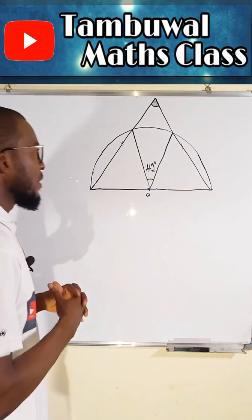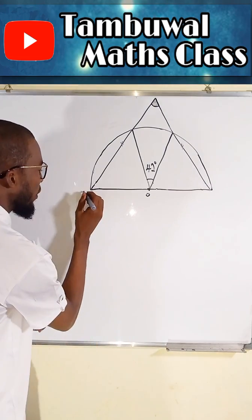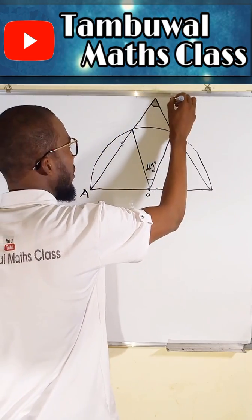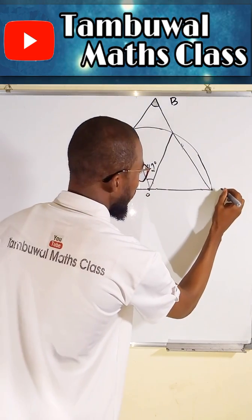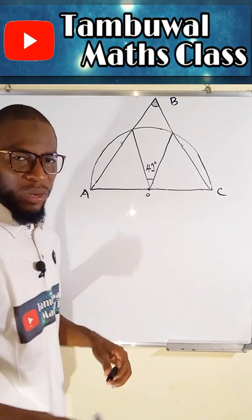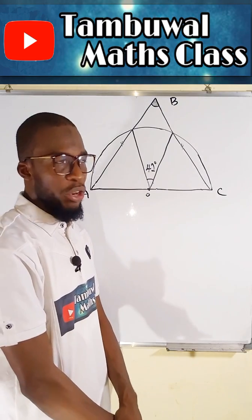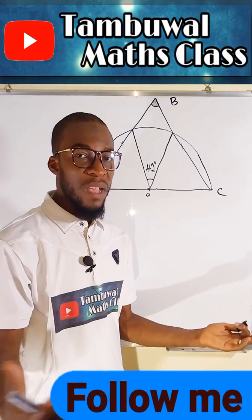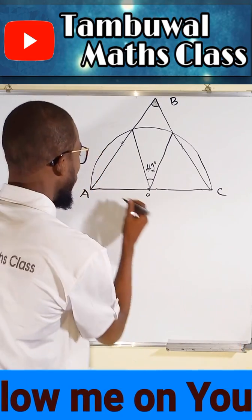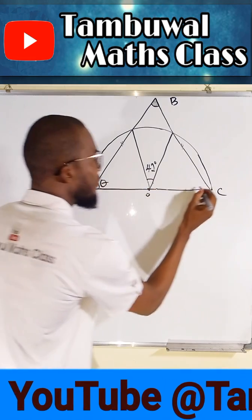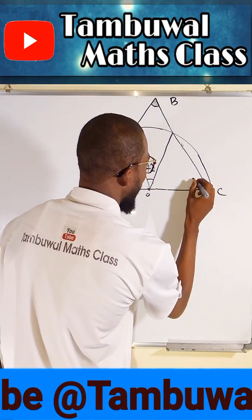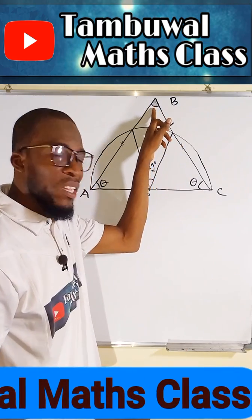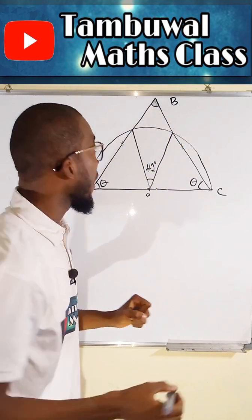From this point — let me call it A — to this point B, down to this point C, is a triangle. This triangle is an isosceles triangle. If it is an isosceles triangle, the base angles must be the same. So if I call this angle theta, I have to call this angle theta as well. Our main target is to find this shaded angle, which I will call X.